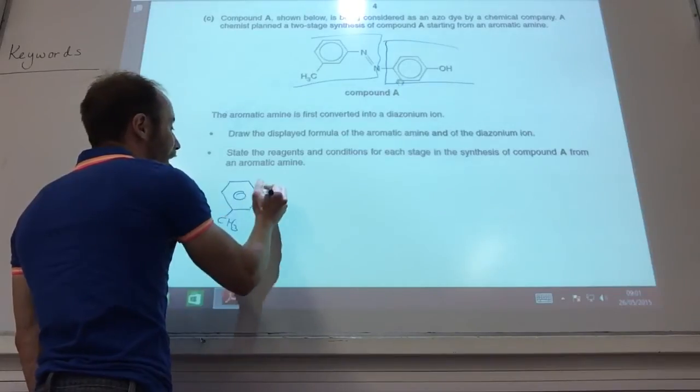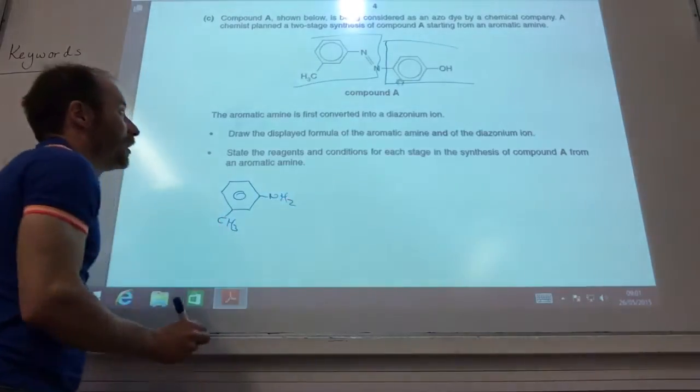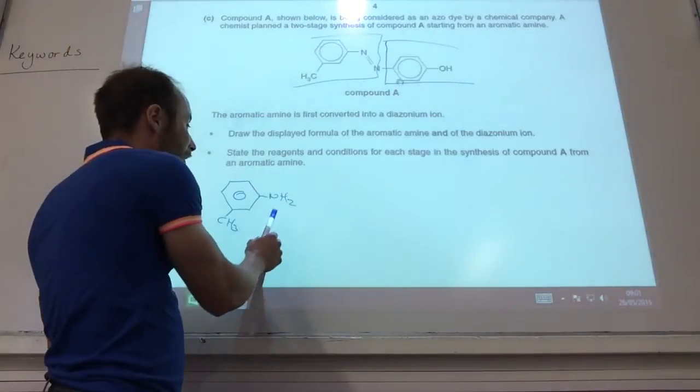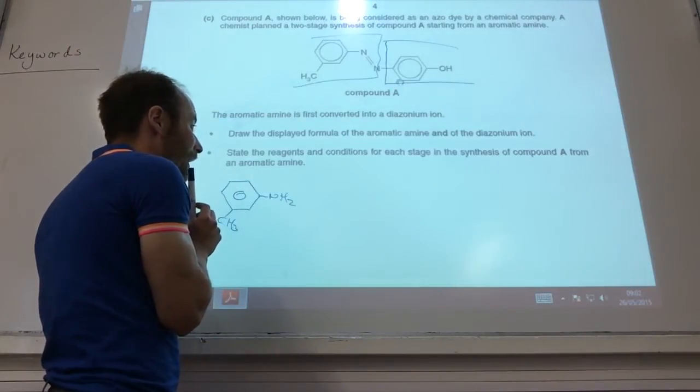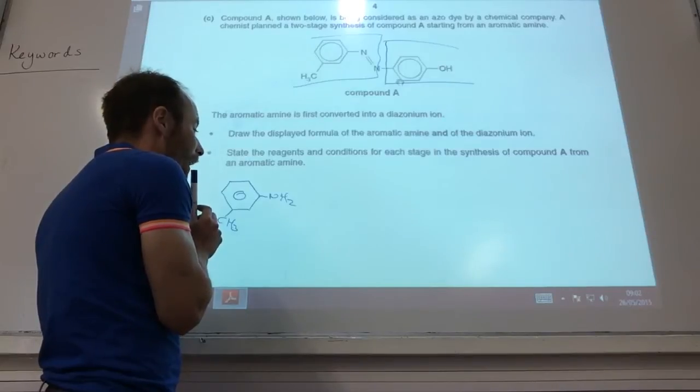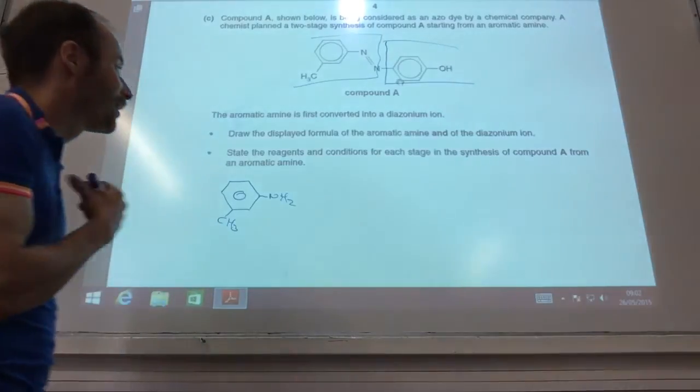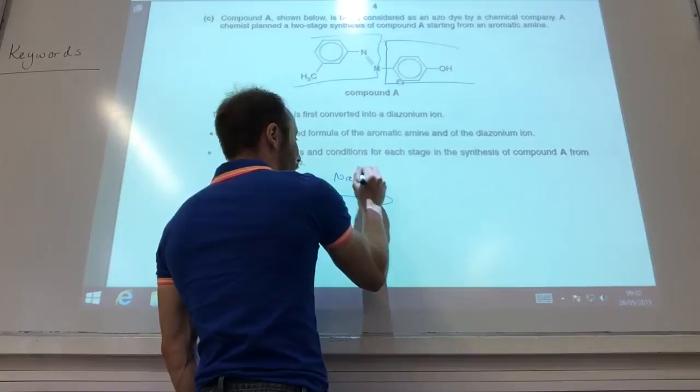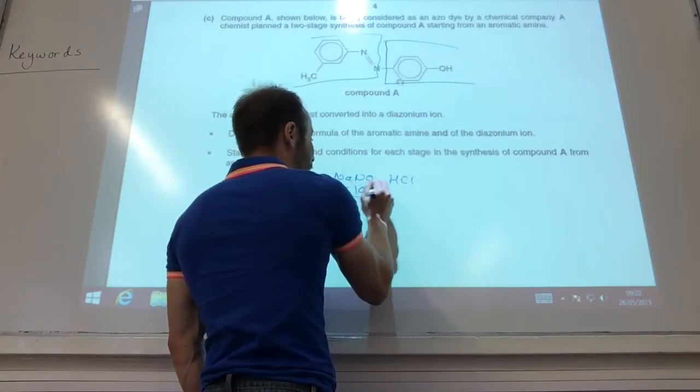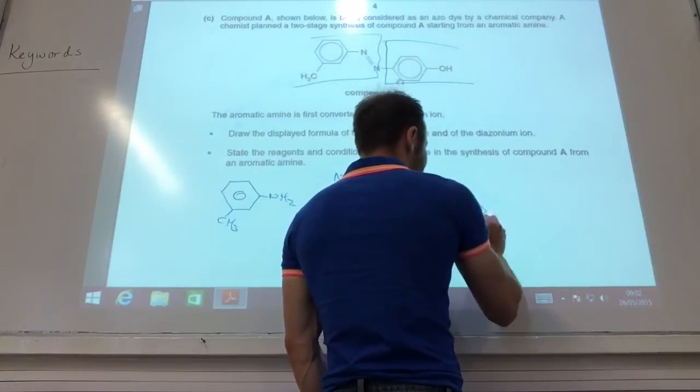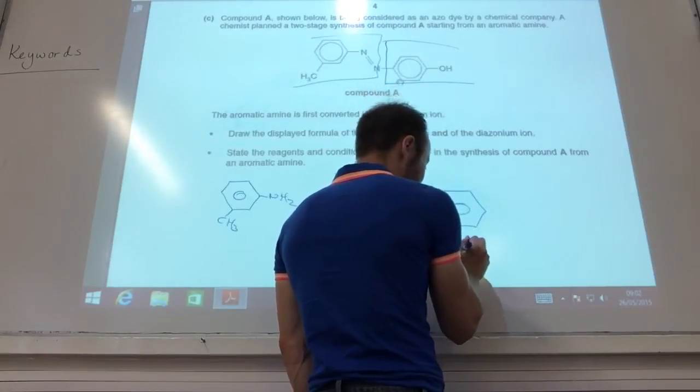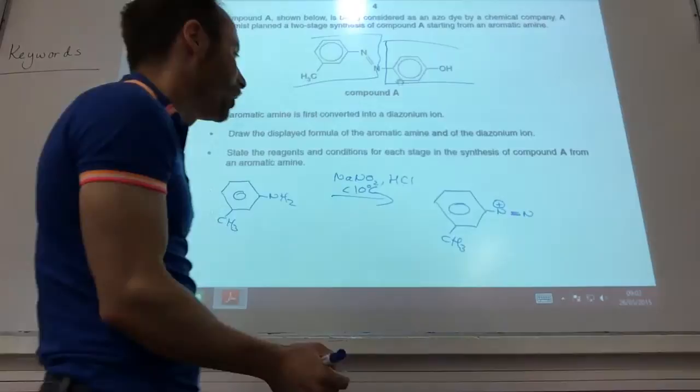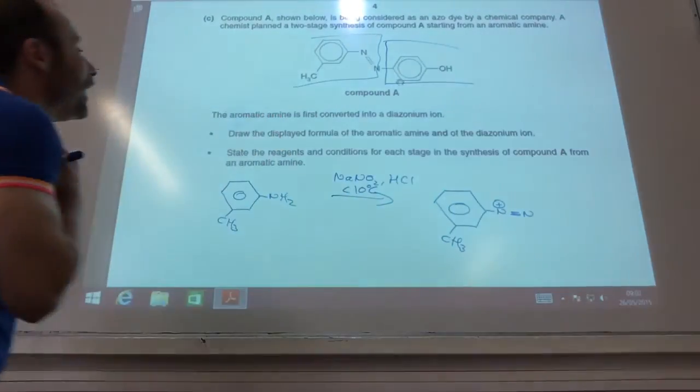So the first thing I need to do for this one is to convert it into the diazonium ion. In order to do that, I need to use sodium nitrite in HCl and have below 10 degrees C, and that would convert it into the diazonium ion. Make sure the plus charge is on that nitrogen there.